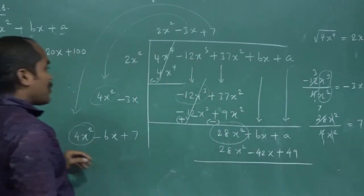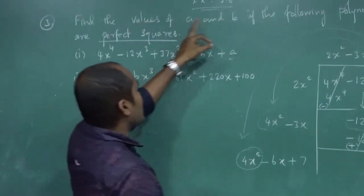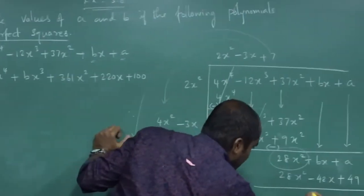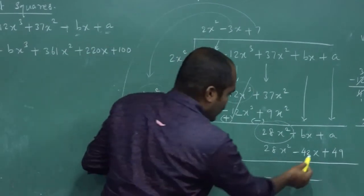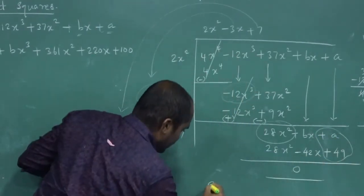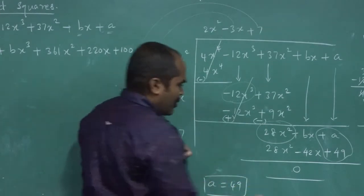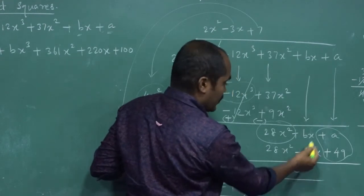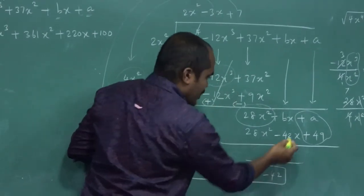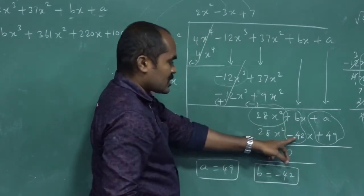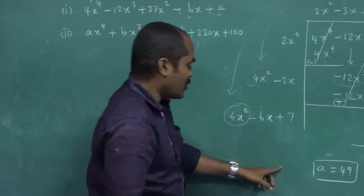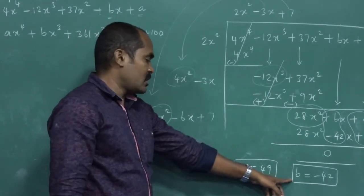Since the given polynomial is a perfect square, the remainder is definitely 0. So we compare the x-coefficient and constant terms. The constant term gives A equal to 49. Comparing x-coefficients: B equals minus 42. Therefore the value of A is 49 and the value of B is minus 42.